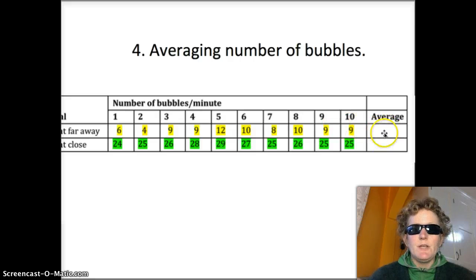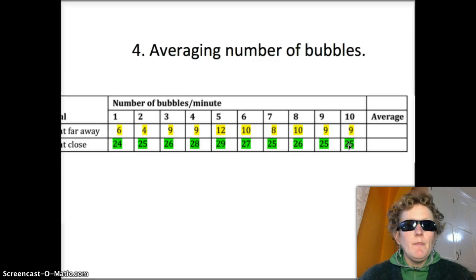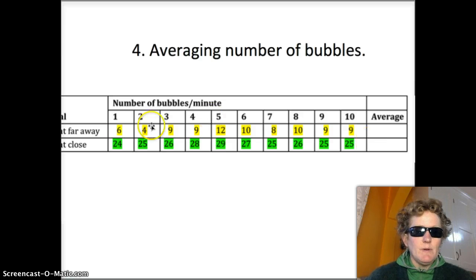When the light is close, add up all these numbers. There are 10 of them so you divide by 10. Remember averaging: you add up all the numbers and divide by the number of data points which is 10. So you can find the averages there, just pause the video and grab your calculator. Add up the 10 numbers for far away and divide by 10. Add up the green numbers for close and divide by 10.